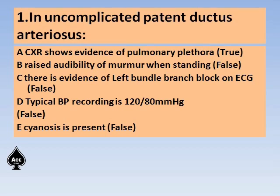BP in PDA usually has wide pulse pressure. The recording given — 120/80 — is wrong. Wide pulse pressure occurs because there is aortic runoff during the diastole of the ventricle, as the ductus is open and blood flows from the aorta to the left pulmonary artery. Cyanosis is absent because PDA is essentially an acyanotic congenital heart disease. Only if there is untreated PDA and you get pulmonary artery hypertension — called Eisenmenger syndrome — do you get cyanosis in PDA.